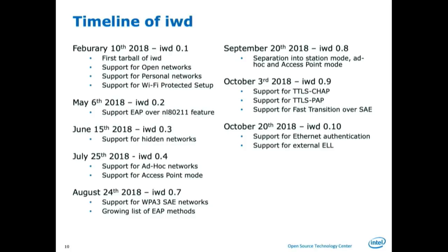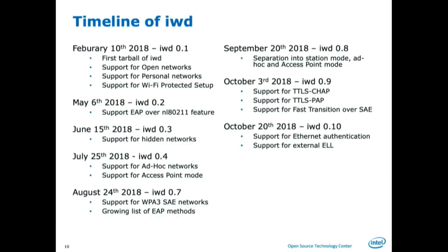February 10th was the first release. You could connect to open networks, personal networks, and use WPS — already really good to get going. We got it into Arch Linux and some other distros and they happily tried it out. In May we fixed one of the fundamental problems that was always bugging us. The whole four-way exchange key exchange happens over an Ethernet port, but everything else happens over Netlink. The kernel schedules Ethernet port packet delivery and Netlink packet delivery at random, so while they arrive in sequence on the wire, when they get to the process they might be reordered.